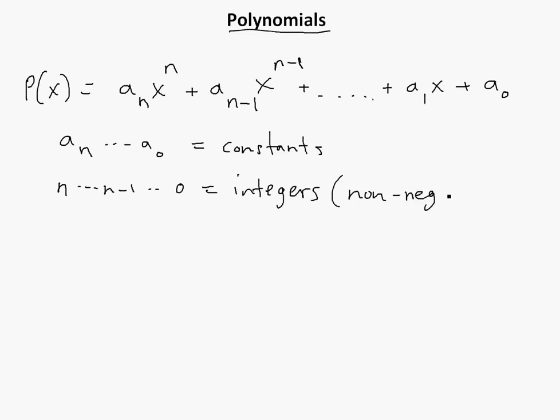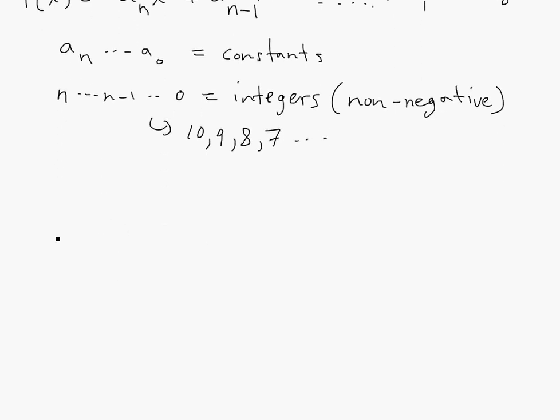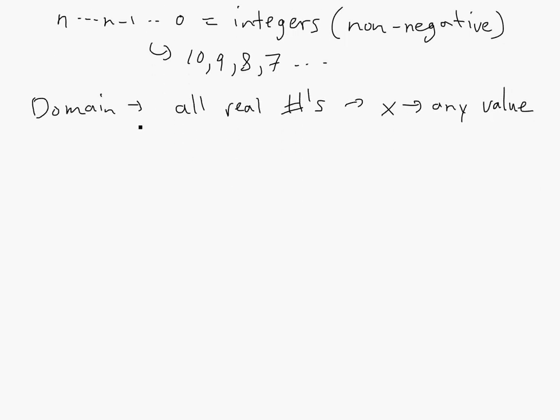Integers but non-negative, so non-negative, so it's just numbers like 10, 9, 8, 7, et cetera, just regular numbers. And the domain of this is just all real numbers. See my other video for what domain are. So this is just basically, x can be any value, any value, it doesn't matter.